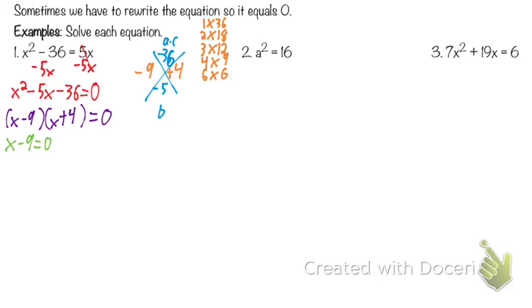What's our other equation? X plus 4 equals zero. How do I solve that first equation? Add 9 to get X by itself — X equals 9. And how do I get X by itself in the other equation? Subtract 4 — X equals negative 4. So those are our two answers. If we were to plug these back in, we'd end up getting what we have originally.